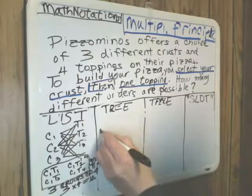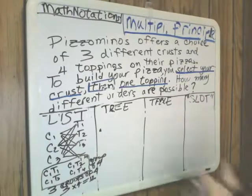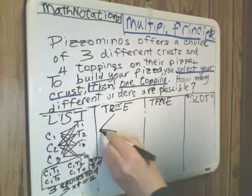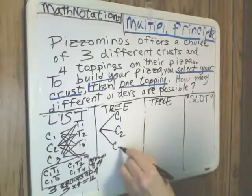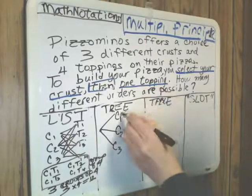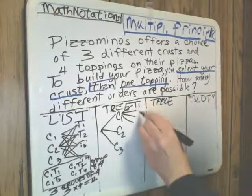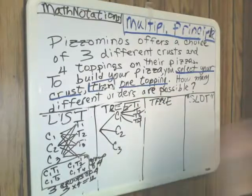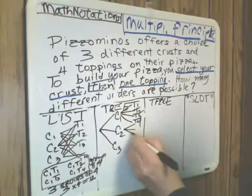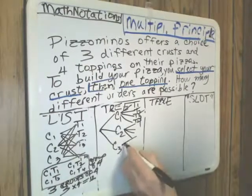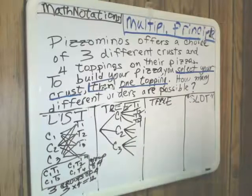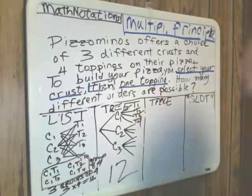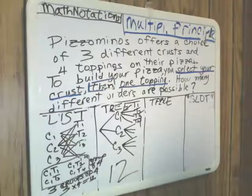Now we'll move on to the tree model. You have your starting point or node, and from there we have our first set of choices for the crust: crust one, crust two, crust three. From crust one, we have four branches coming out for each of the toppings — topping one, topping two, topping three, topping four. There's our first set of four ways. Then we would similarly have our second set of four ways and our third set. So again, we have 12 ways using a tree model. This is often used for counting, for permutations later on, and for probability problems.